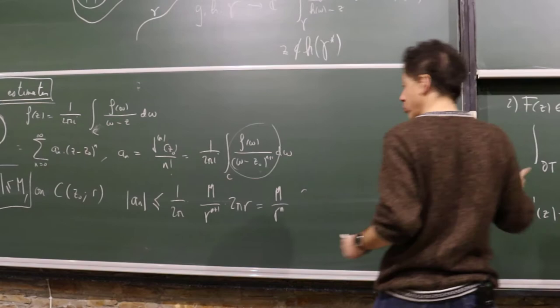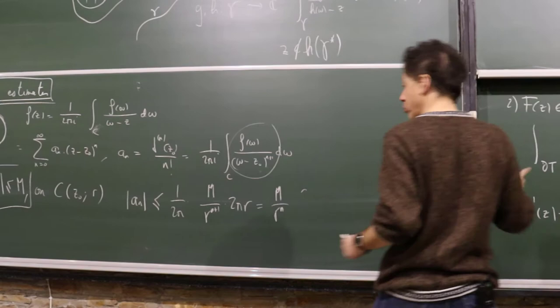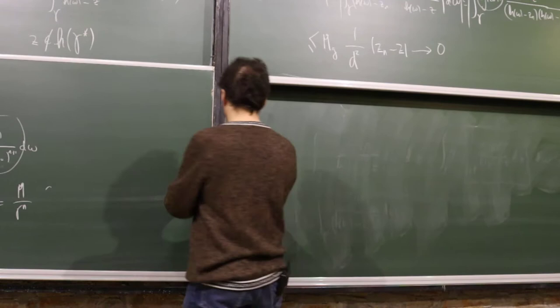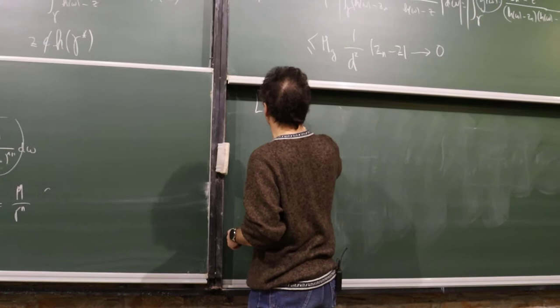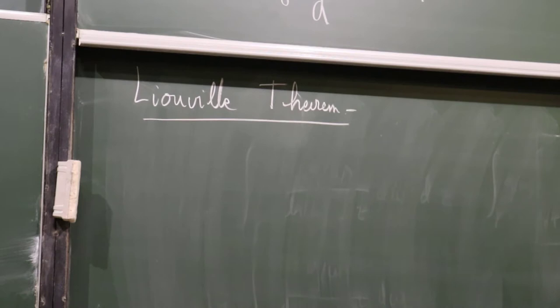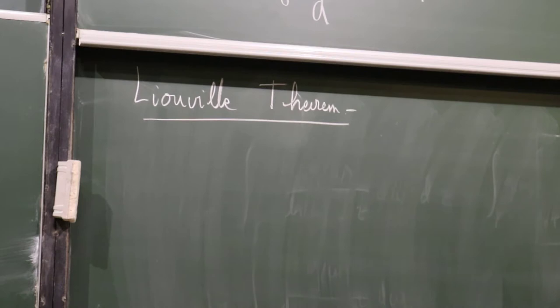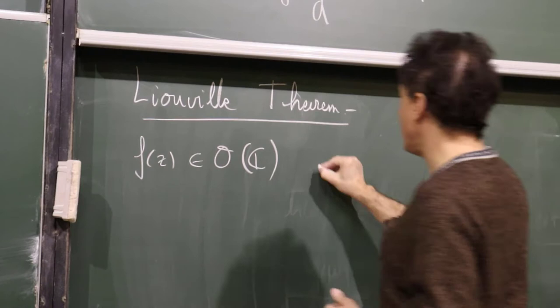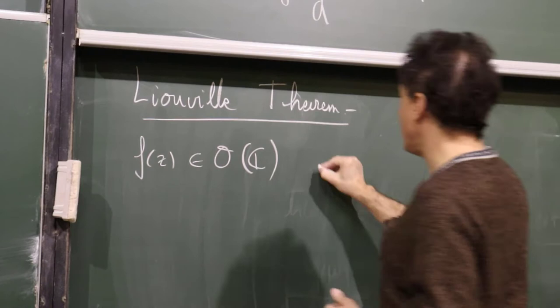The second result, which is a consequence of Cauchy estimates, is Liouville's theorem. First, a definition: a function is called an entire function if it is holomorphic on all of ℂ.